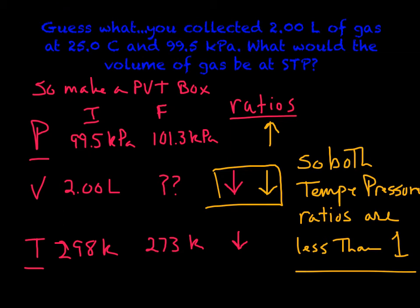Go up here to pressure. Pressure is increasing, pressure's going up. According to Boyle's law, that means volume's got to decrease. So if both changes are making my volume decrease, both temperature and pressure ratios are going to be less than one when we set them up.